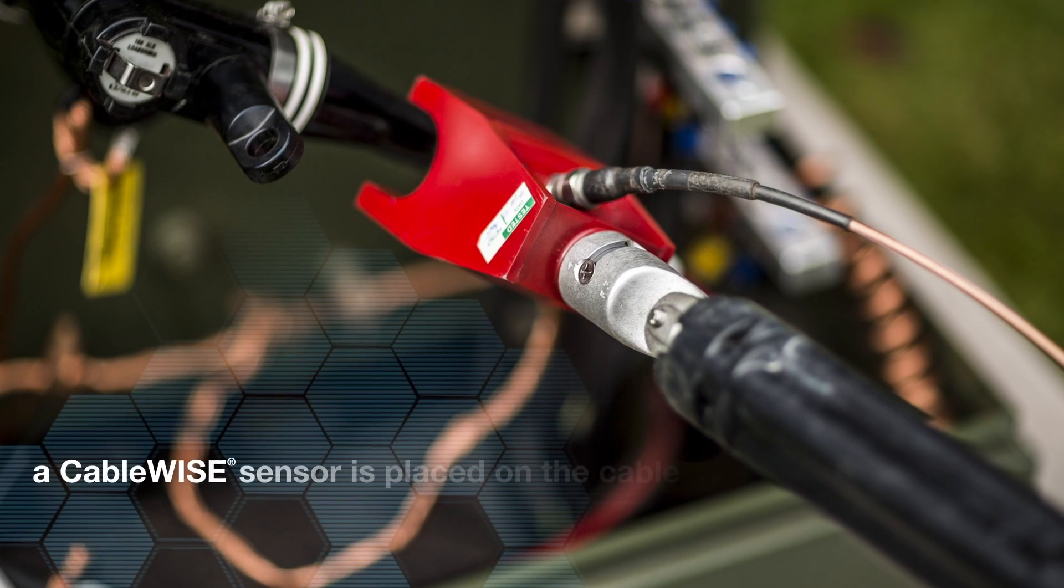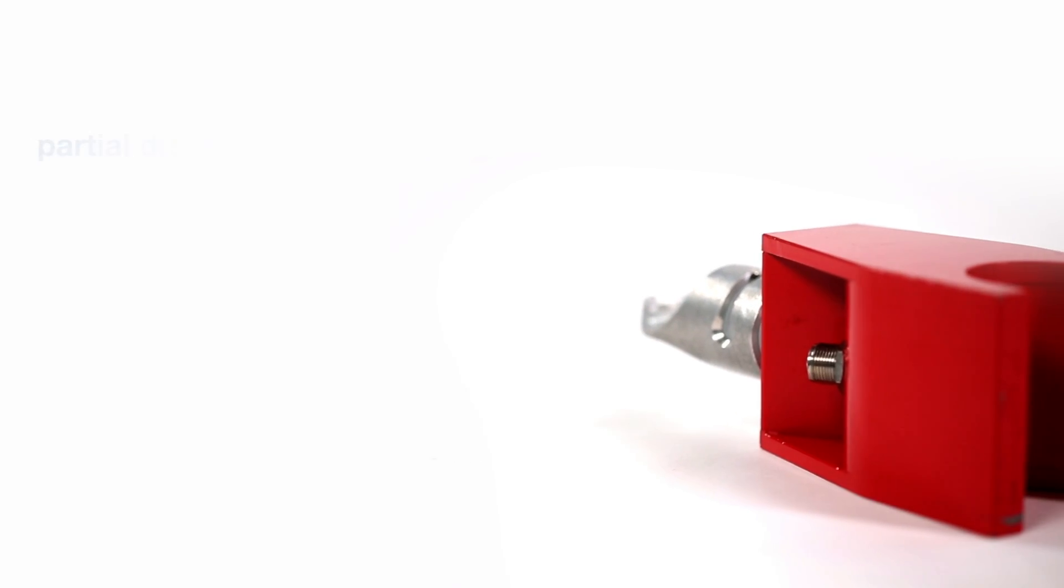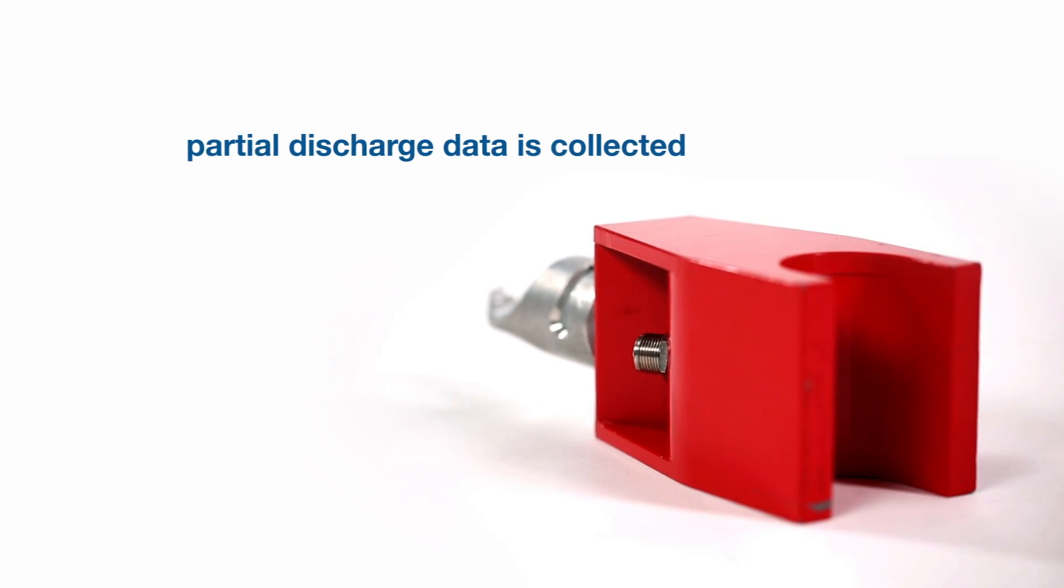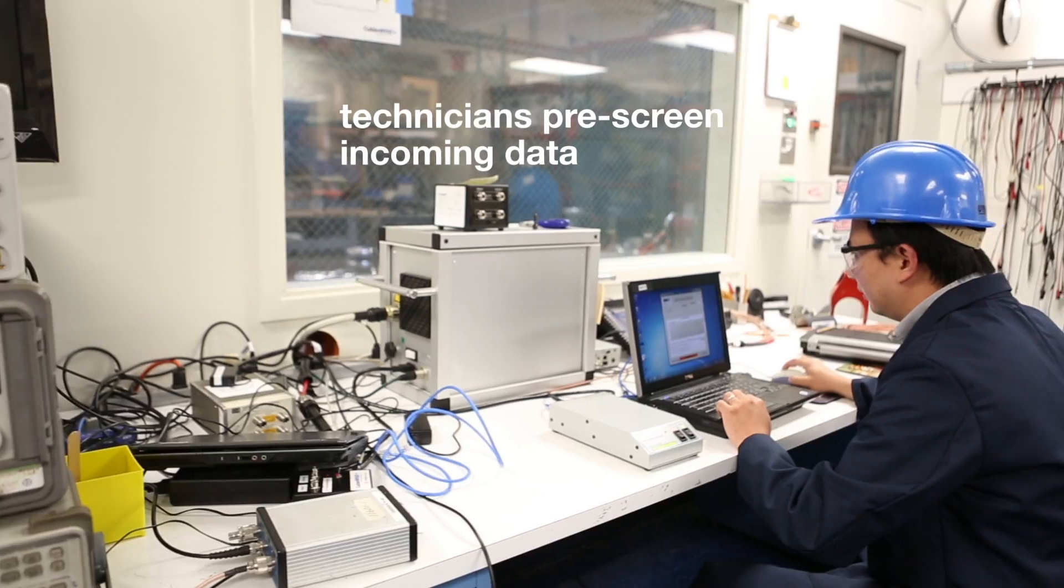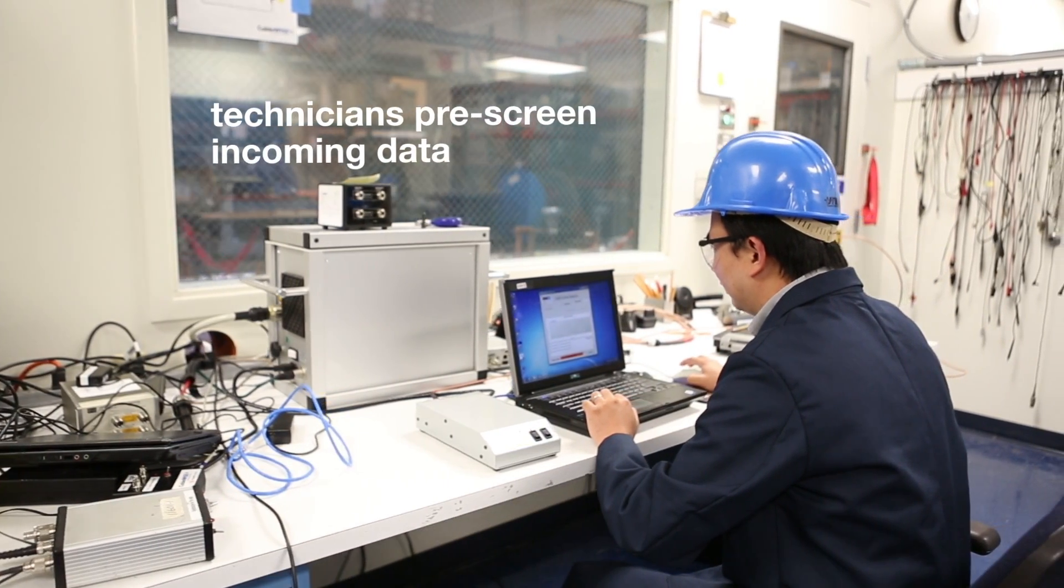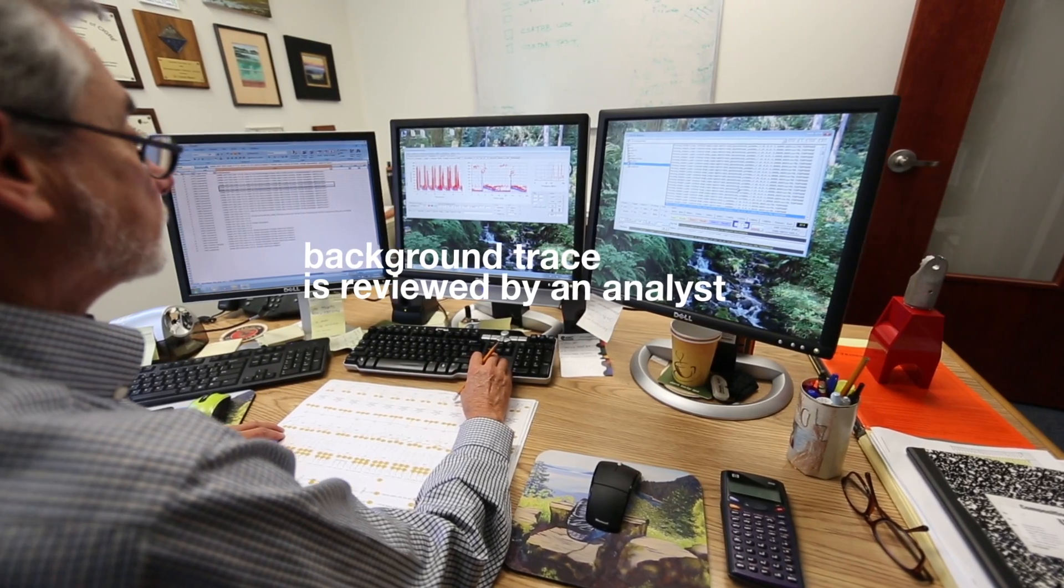A Cablewise sensor is placed on the cable near the termination, and partial discharge data is collected for several minutes. Technicians pre-screen the incoming data and record a background trace, which is then reviewed by an analyst.